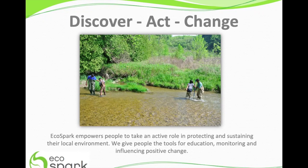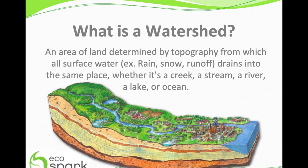So what is a watershed? A watershed is an area of land determined by topography from which all surface waters such as rain, snow, and runoff drain into the same place — whether it's a creek, stream, river, lake, or ocean. The high elevation levels are what dictate the direction in which the water will flow.